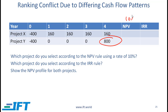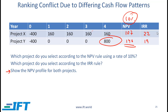For NPV, assume a discount rate of 10%, and then decide which project to select based on each rule. Also show the NPV profile for both projects. Based on the NPV rule, it clearly makes sense to select project Y because it has a higher NPV. But based on the IRR rule, it makes sense to select project X because X has a higher IRR. When there is a conflict, the NPV rule is what you go with.